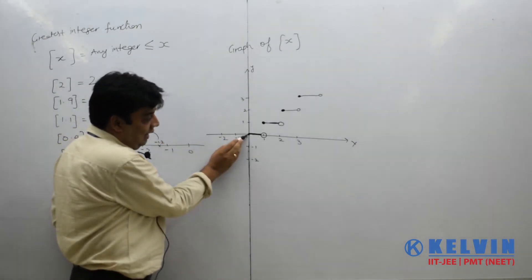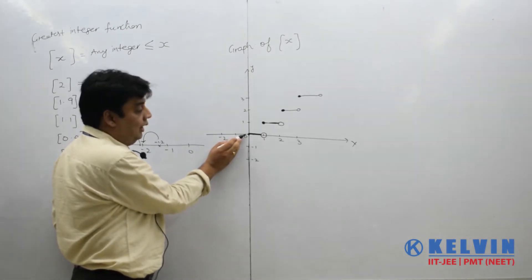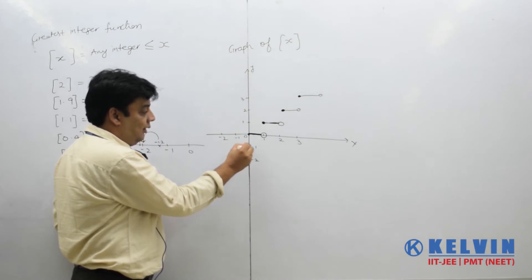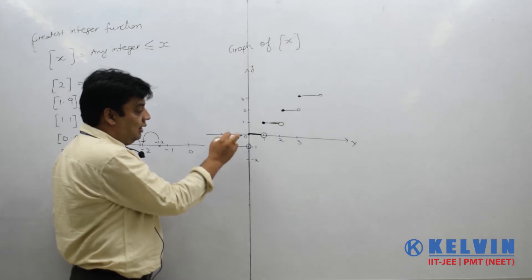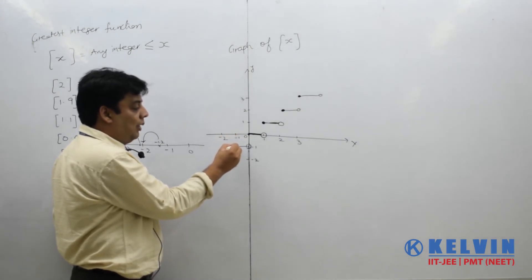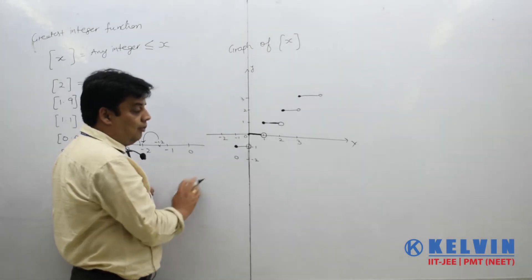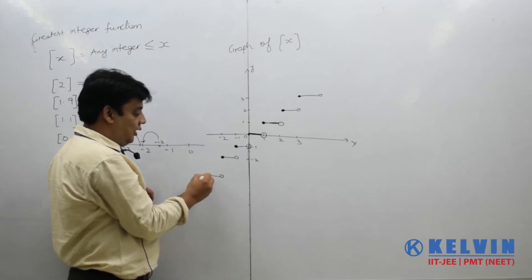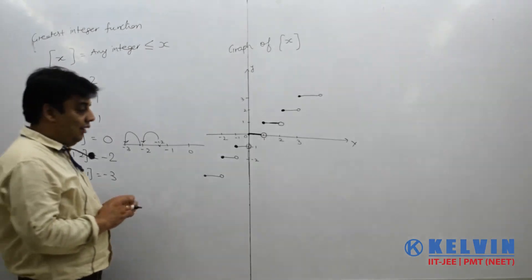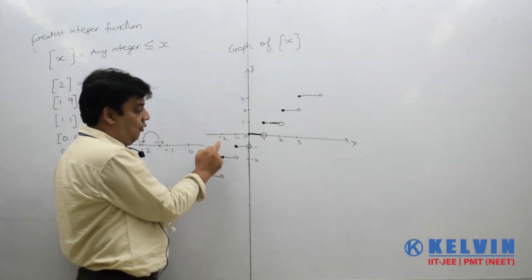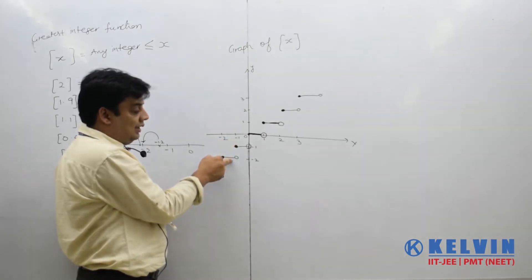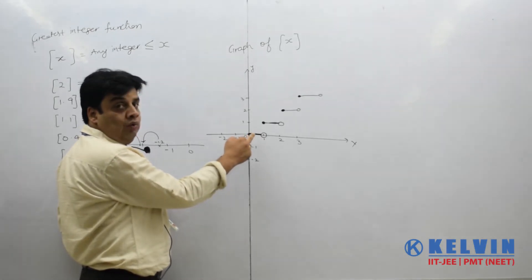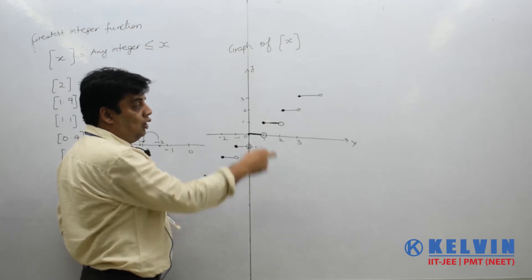On the negative side, for x from minus 1 down to just before 0, the Greatest Integer becomes minus 1, with an open circle at 0. For x from minus 2 to just before minus 1, the Greatest Integer is minus 2, and we can extend this further. So: from minus 2 to minus 1 (excluding minus 1), Greatest Integer is minus 2; from minus 1 to 0 (excluding 0), it is minus 1; from 0 to 1 it is 0; from 1 to 2 it is 1.